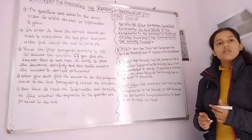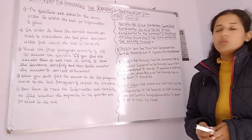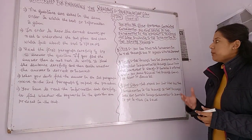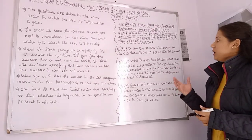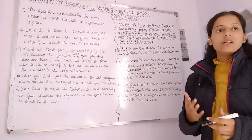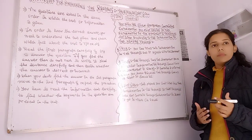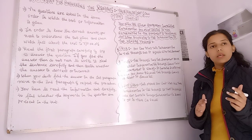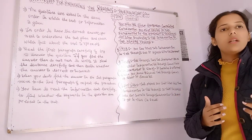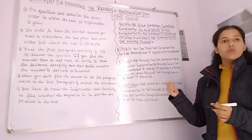First, you have to understand what true, false, and not given mean. What is basically TRUE? True means you can find the information in the passage and it agrees with the statement. If the statement matches with the relevant part of the passage, that means it is definitely true.